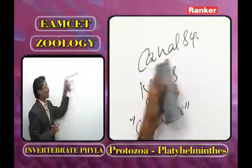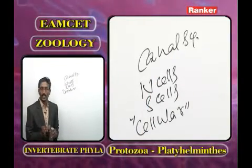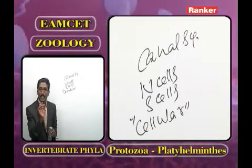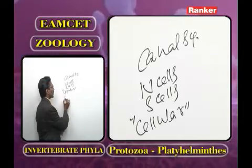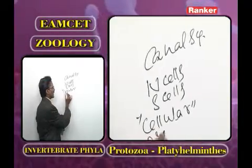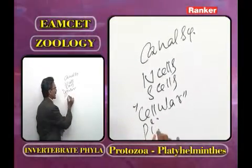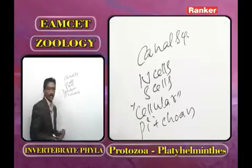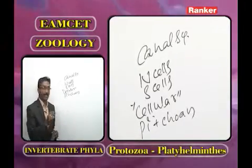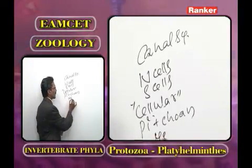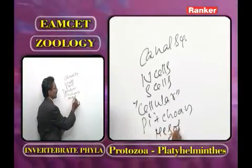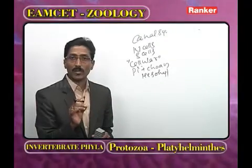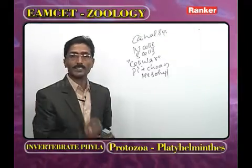In phylum Porifera, the body wall has two layers: the outer pinacoderm and the inner choanoderm. Between them is the mesohyal — a gelatinous substance containing amoebocytes.